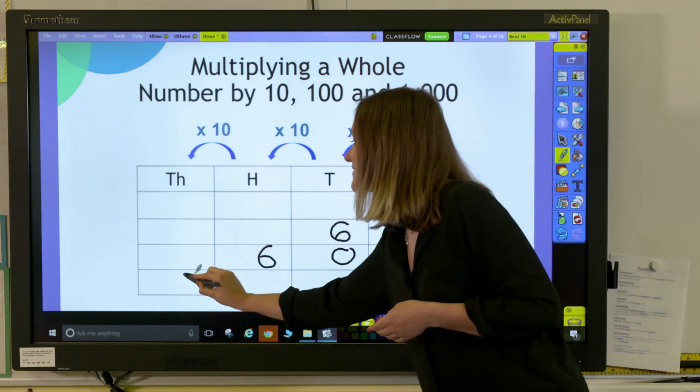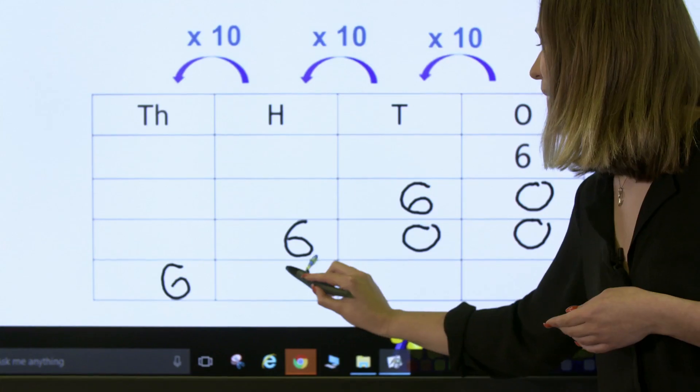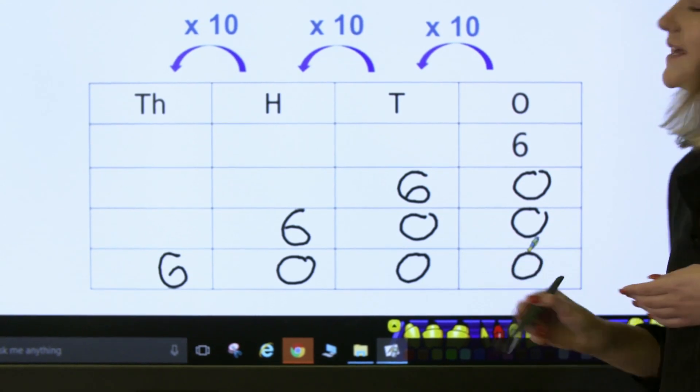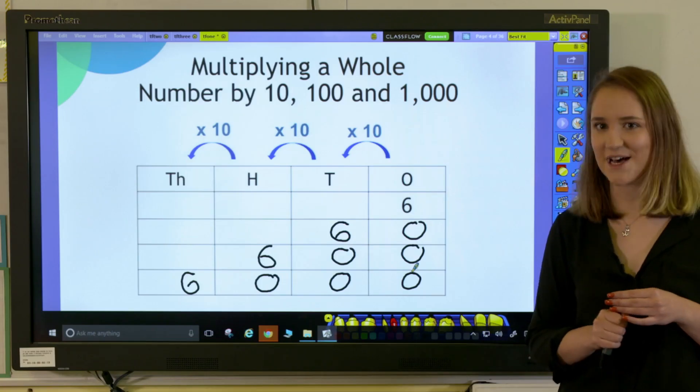We can then put our place value holders in, which means that 6 multiplied by 1,000 is 6,000.